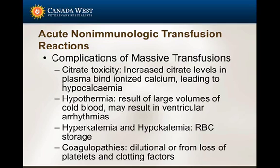Some complications of massive transfusion: citrate toxicity can occur with multiple transfusions, since citrate — an anticoagulant used in storing blood products — binds calcium, causing hypocalcemia. Monitor for signs of tetany or tremors. Hypothermia can result from giving large volumes of blood not warmed to room temperature and can cause cardiac arrhythmias. Hyperkalemia is more common due to damaged red cells leaking potassium, though it appears less clinically significant in animals than in humans. Coagulopathies may also occur due to dilution or loss of platelets and clotting factors.